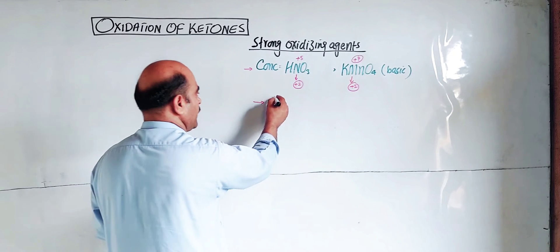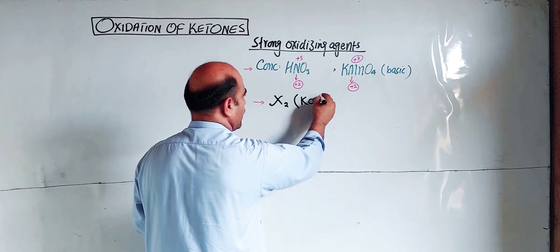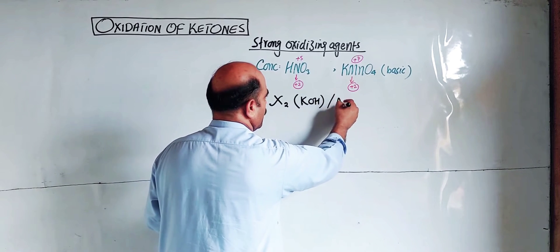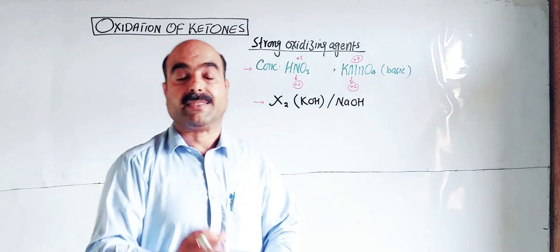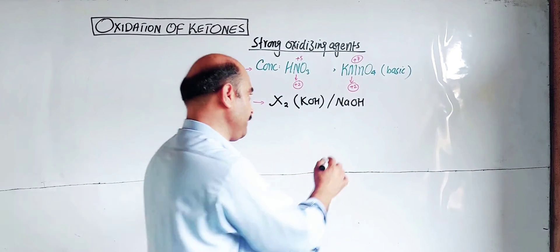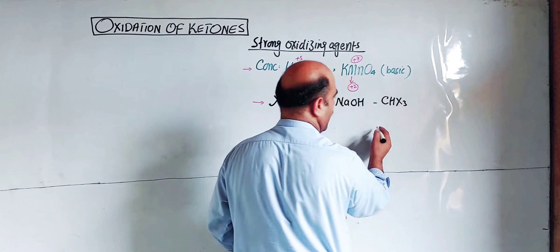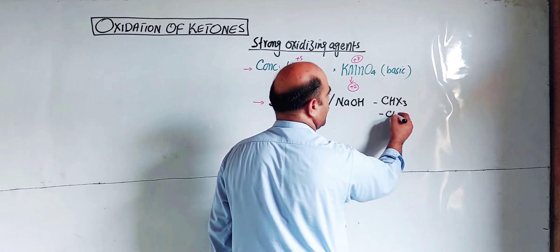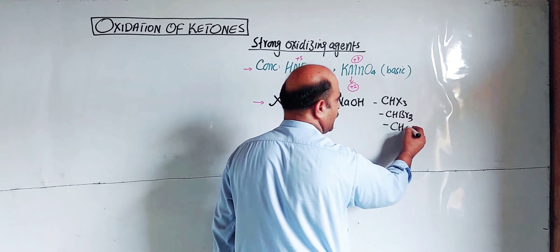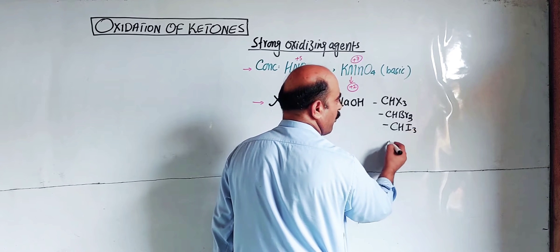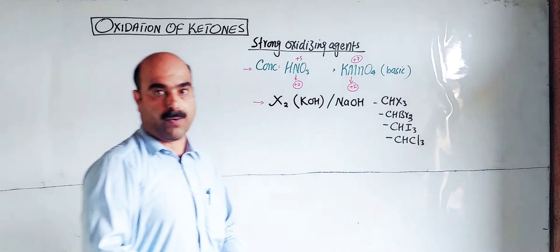Another method is the haloform reaction. In this reaction, halogens are used in the presence of a basic medium — potassium hydroxide or sodium hydroxide. The product CHX3 is called haloform. Specifically, CHBr3 is called bromoform, CHI3 is called iodoform, and CHCl3 is called chloroform.